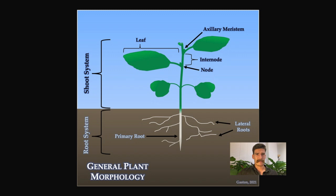Here is a diagram of everything we've talked about so far put together under one plant. We have our shoot system on top, which has our phytomer with the node, the leaf, the axillary meristem, and the internode. On the bottom we have our root system, comprised of our primary root and the lateral roots.